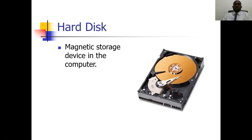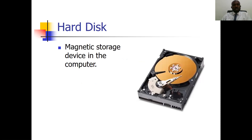This is also a hard disk — a magnetic storage device inside the computer. It is one of the most basic storage devices you can find, because they are normally found inside the computer. It is what people normally call Drive C, the most common one. When you buy your computer, you already have your hard disk inside.